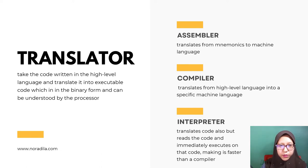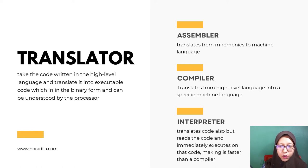An interpreter translates code and also reads the code and immediately executes on that code, making it faster than a compiler. If an error is encountered, the interpreter will not move on to translate the next line. It will notify the user of an error immediately, making it a useful tool to assist programmers as they attempt to identify and rectify errors.